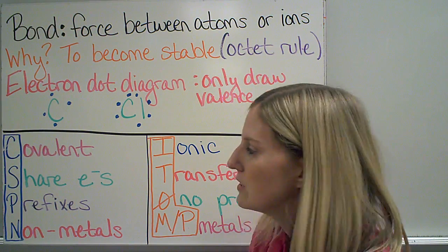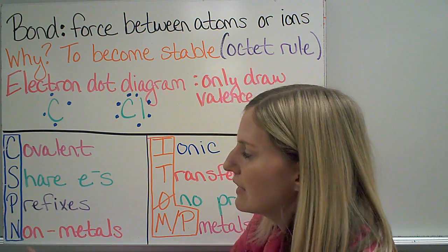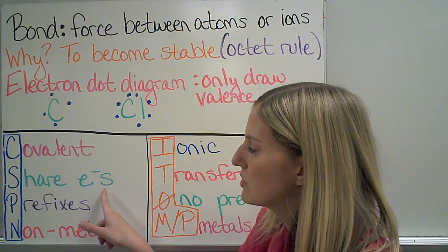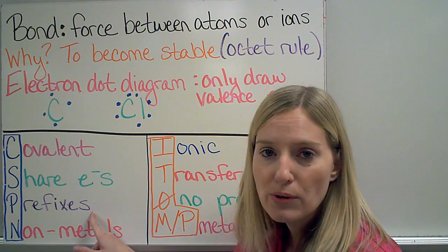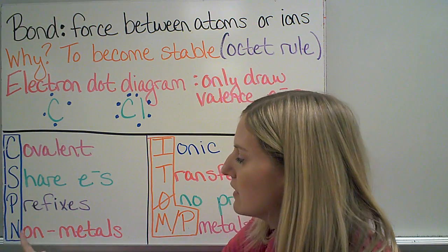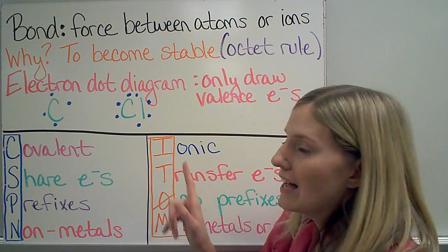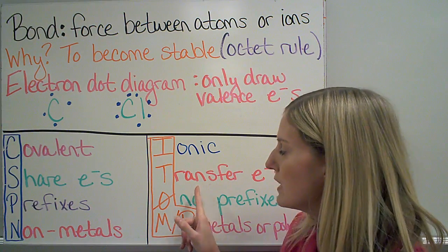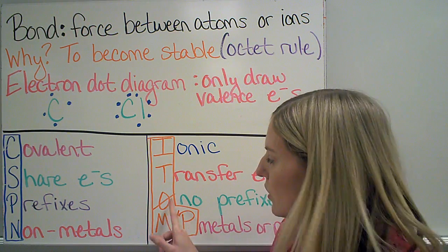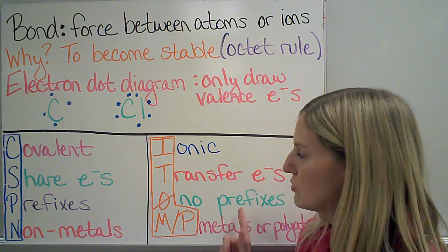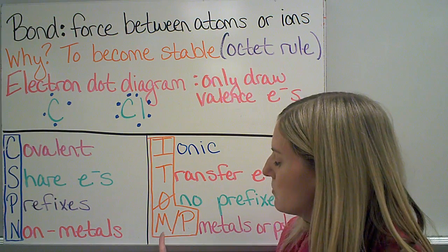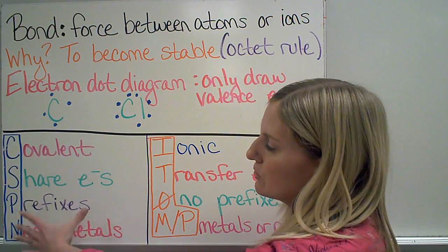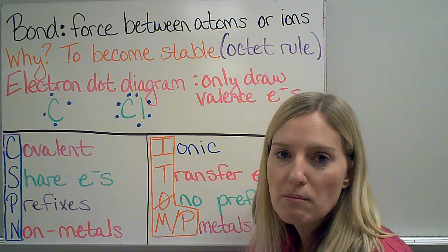To help you remember what happens with each, I've come up with some ways to remember. For covalent, think of CSPN — just like ESPN but with a C. The C is for covalent, the S is for sharing electrons, the P is for prefixes like one being mono, and the N is for non-metals. For ionic bonding, remember ITOMP. The I is for ionic, the T is for transferring electrons, the O with a slash through it means we're not going to use prefixes for ionic bonds, and the M and P stand for metals and polyatomic ions. If you can remember these things, it will make the differences between them much easier.